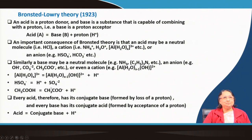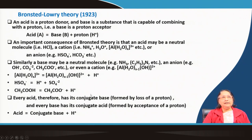It has been shown in equation form why something is an acid and why something is a base. From this we can easily understand that every acid has its conjugate base. When an acid gives up a proton it forms another compound which is nothing but its conjugate base, formed by the loss of a proton. Every base has its conjugate acid formed by the acceptance of a proton. It is therefore also called conjugate acid-base theory.